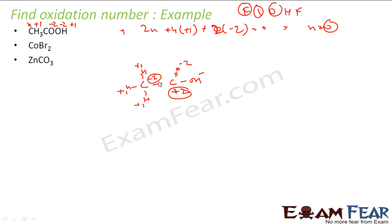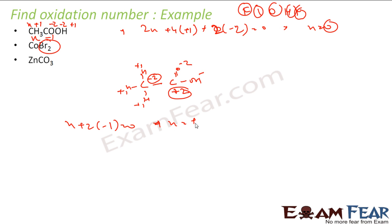Let's take CoBr2. Applying the formula: free element — no; ion — no; oxygen — there is no oxygen; hydrogen — no; fluorine — no; group 1 — no; group 2 — no; group 13 — no. Let bromine be minus 1. Cobalt is x. So: x + 2(−1) = 0, giving x = plus 2. The oxidation number of cobalt in CoBr2 is plus 2.